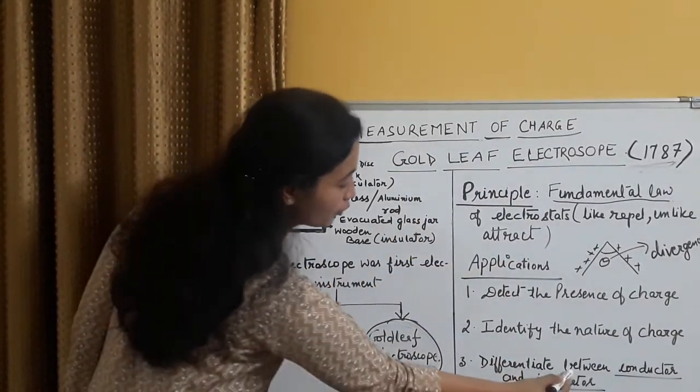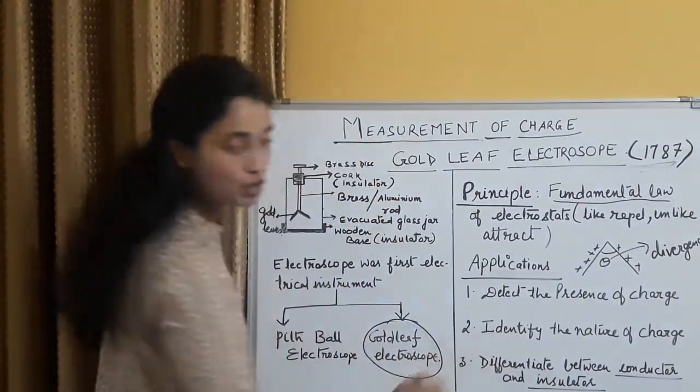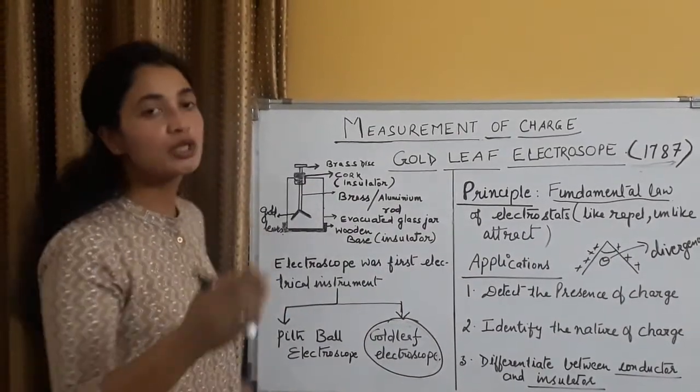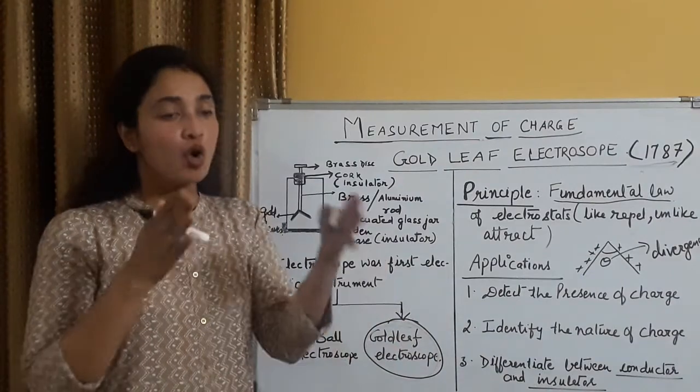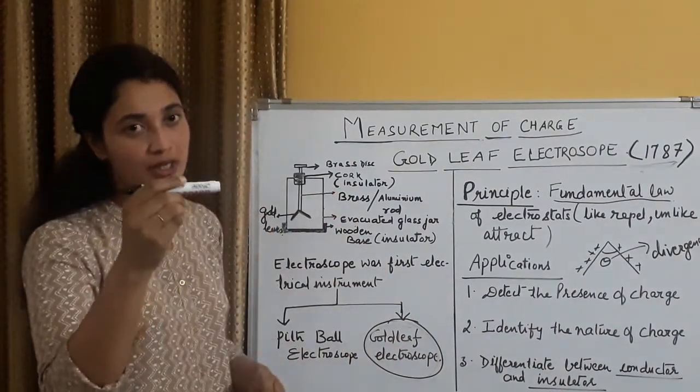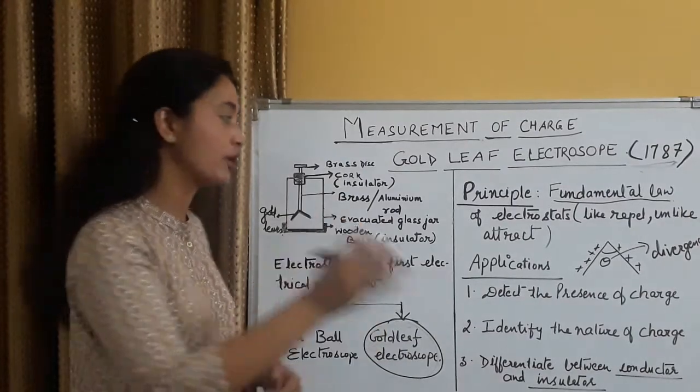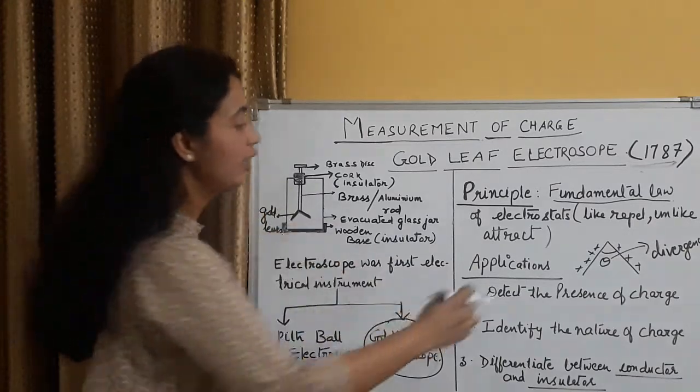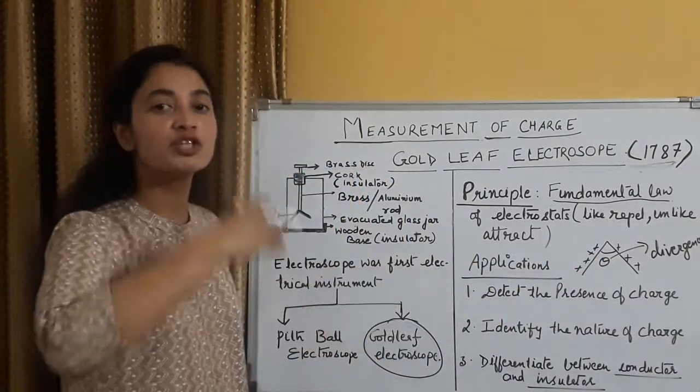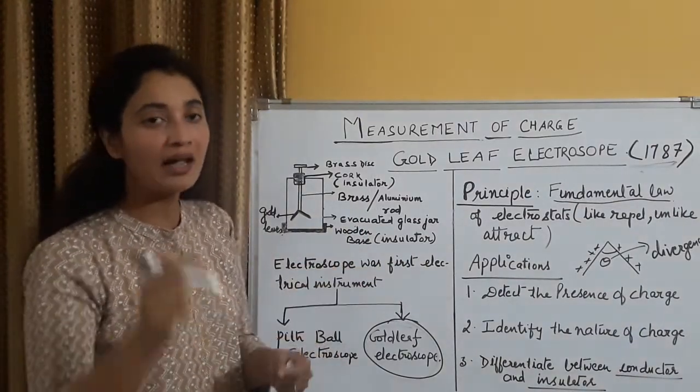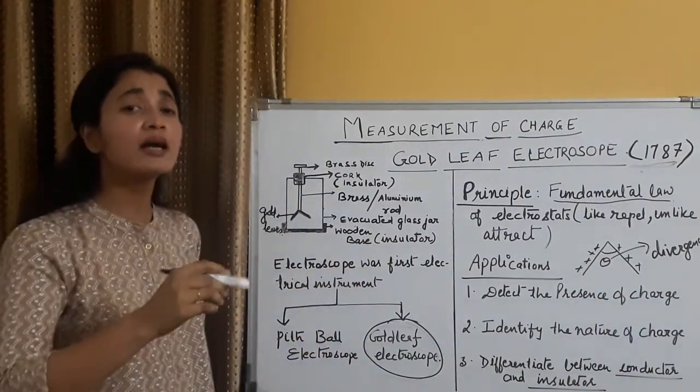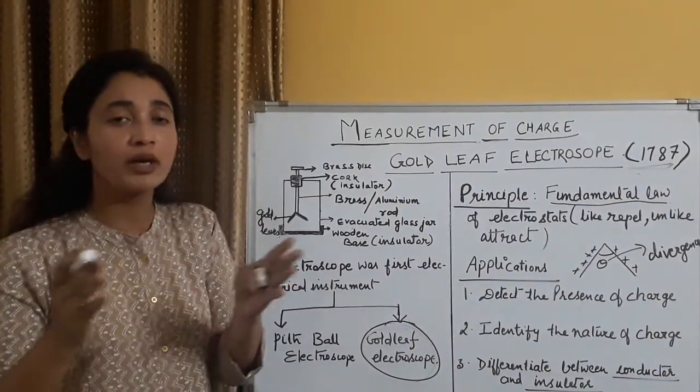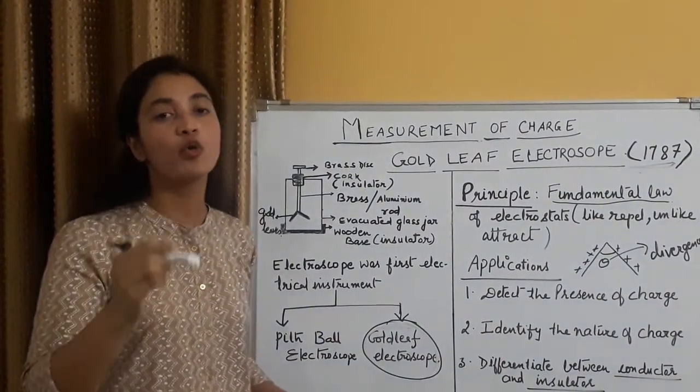Third application is, differentiate between conductor and insulator. Hame check karna hai ki, jo given test rod hai, woh conductor hai, ya insulator hai. Uske liye, we will use two electroscopes, aur un dono ko, hum test rod se connect karenge. Ek electroscope ko, hum charge denge, for example, already positive hai, dusra electroscope ko, uncharged rakhenge. Agar test rod conductor hai, to ek electroscope se, dusra electroscope mein, charge ka transfer hona, aur divergence badhna, ensure karta hai ki, yeh conductor hai, humara test rod. Lekin agar dusra electroscope mein, koi change nahi aa raha hai, leaves ke divergence mein, na woh converge ho raha, na hi diverge ho raha, iska matlab, jo humara test rod hai, woh ek insulator hai.